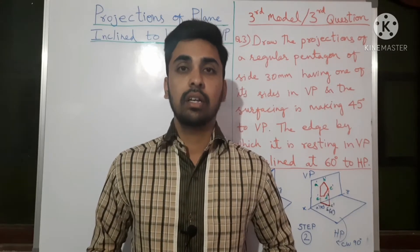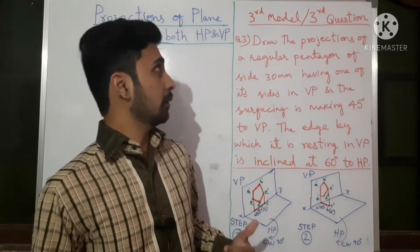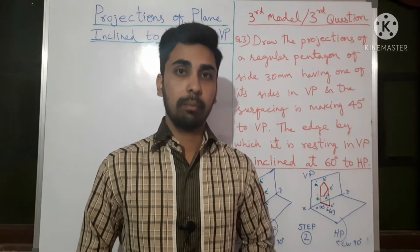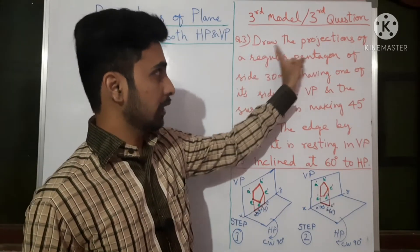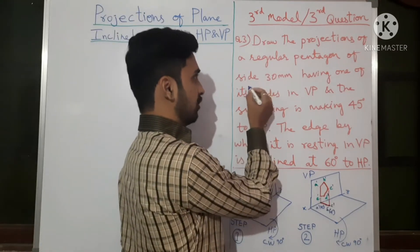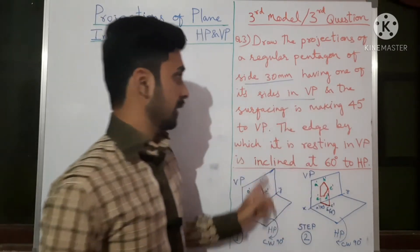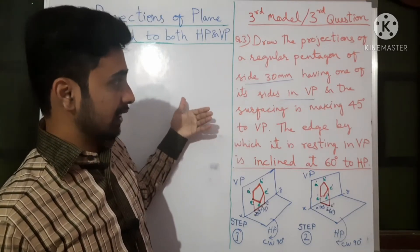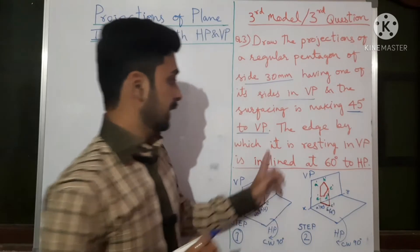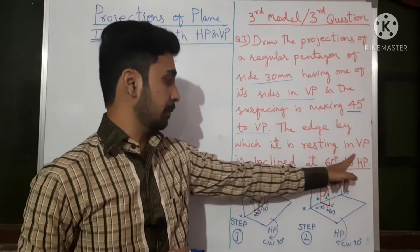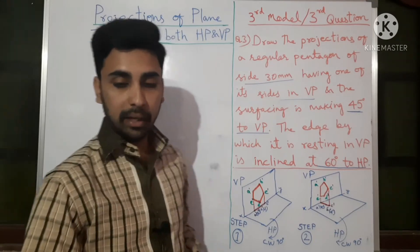Edge resting in HP was the first model, corner resting in HP was the second model. Now this is the third model where the edge is resting in the VP — the vertical plane. The question asks us to draw projections of a Pentagon of side 30 mm, having one of its sides in the VP. The surface of the Pentagon makes 45 degrees with respect to the VP, and the edge resting in the VP is inclined at 60 degrees to the HP.